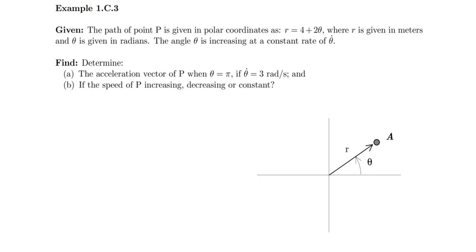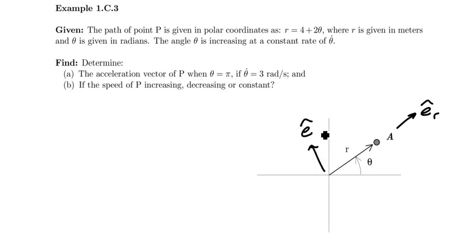The first thing we're going to do is note what natural coordinate set we're in. In this case it's fairly obvious we're in a polar coordinate set, so we can go ahead and identify our e_r and e_theta axes. e_r will be pointed radially outward along the radius from the origin, and e_theta will be perpendicular to that in the direction of increasing theta.